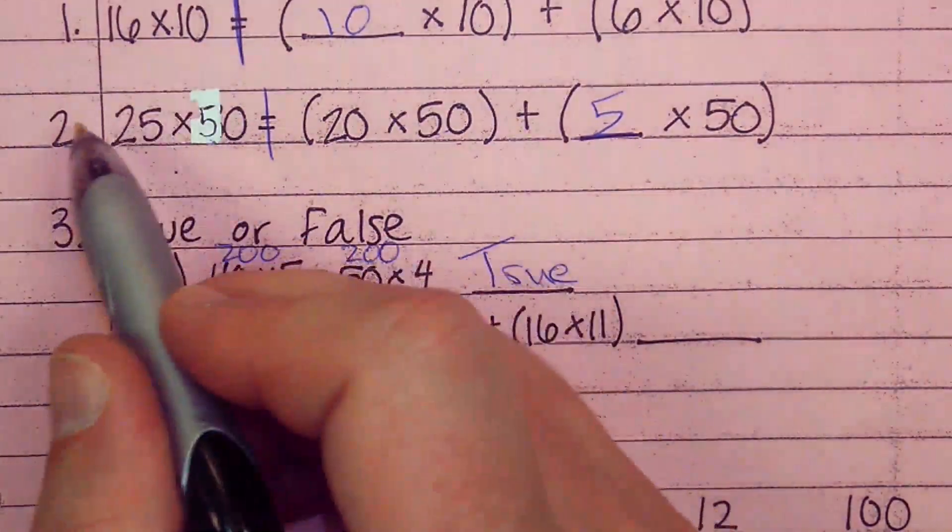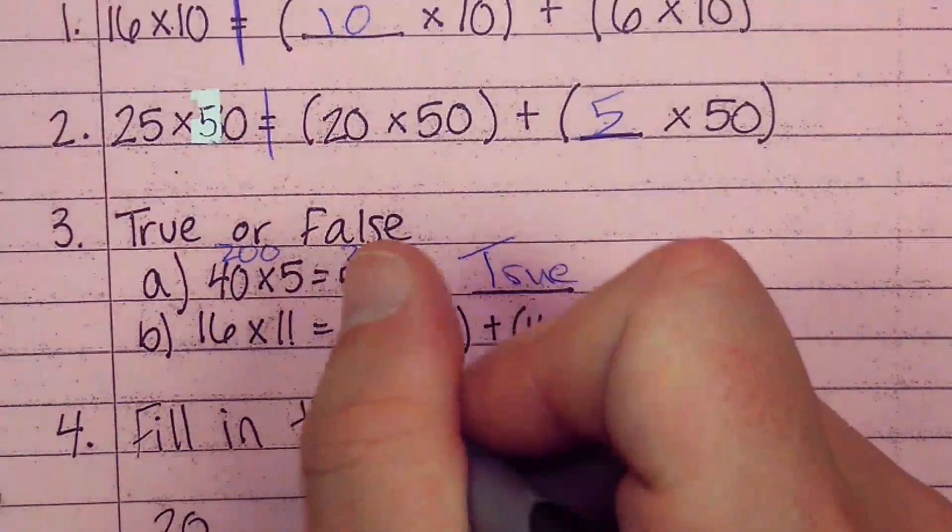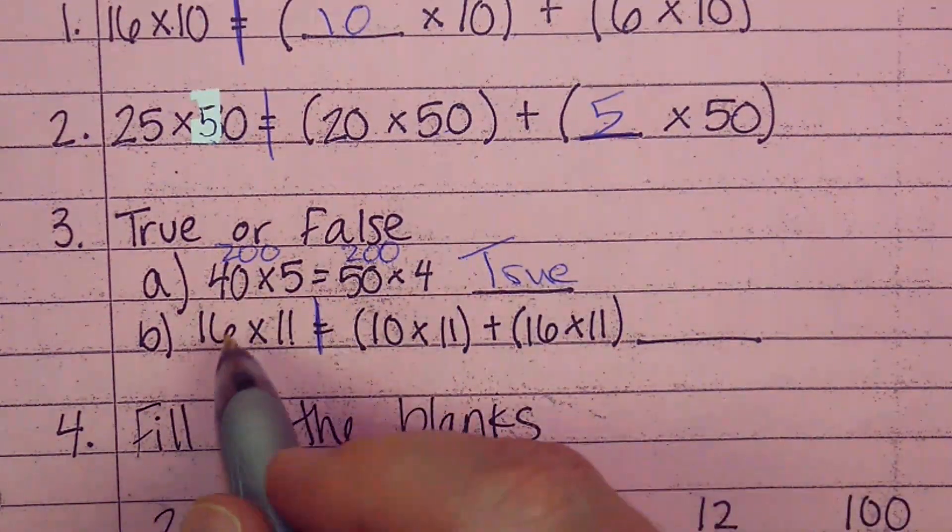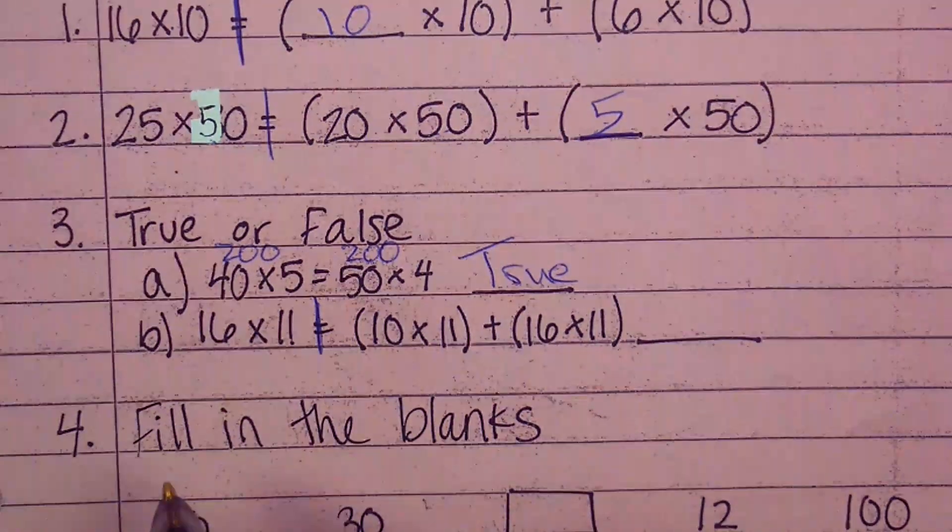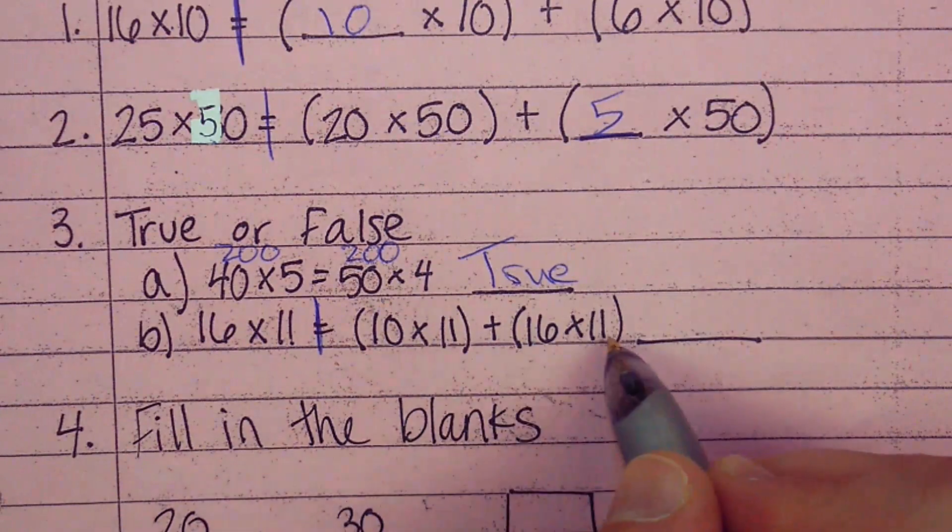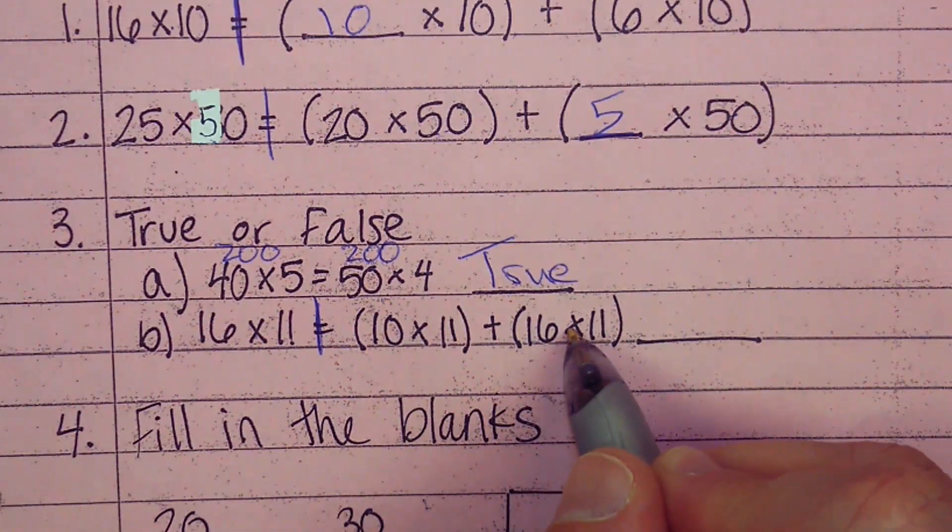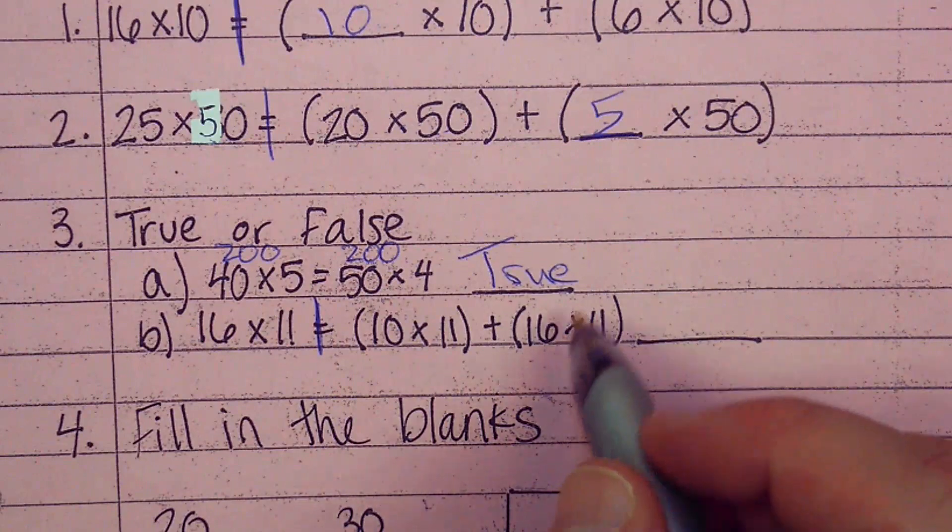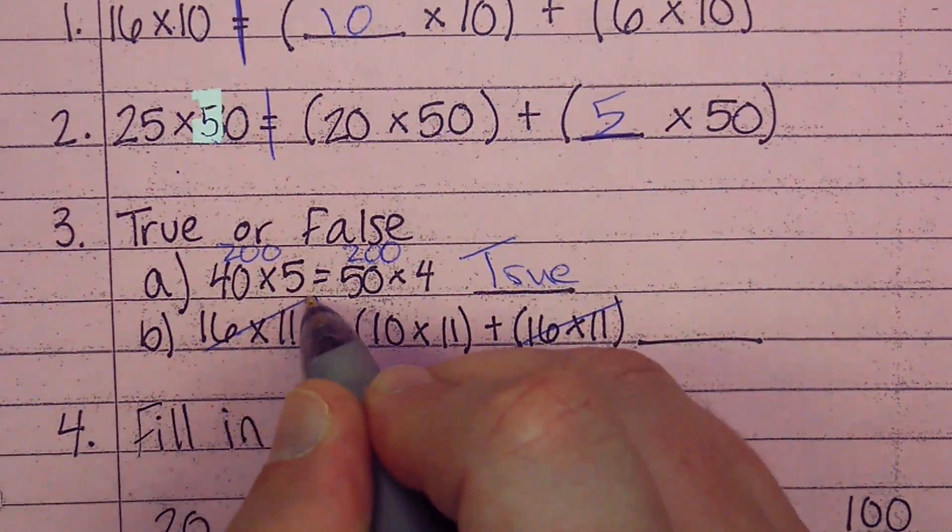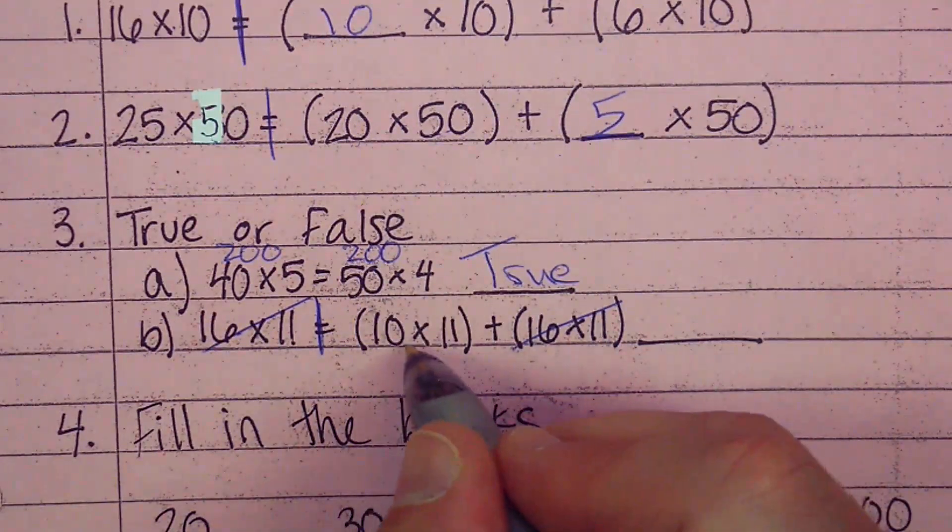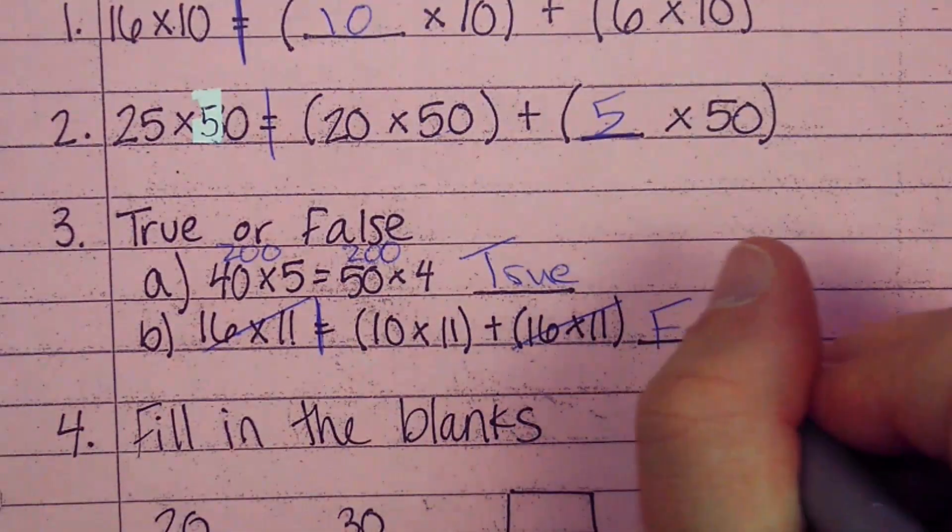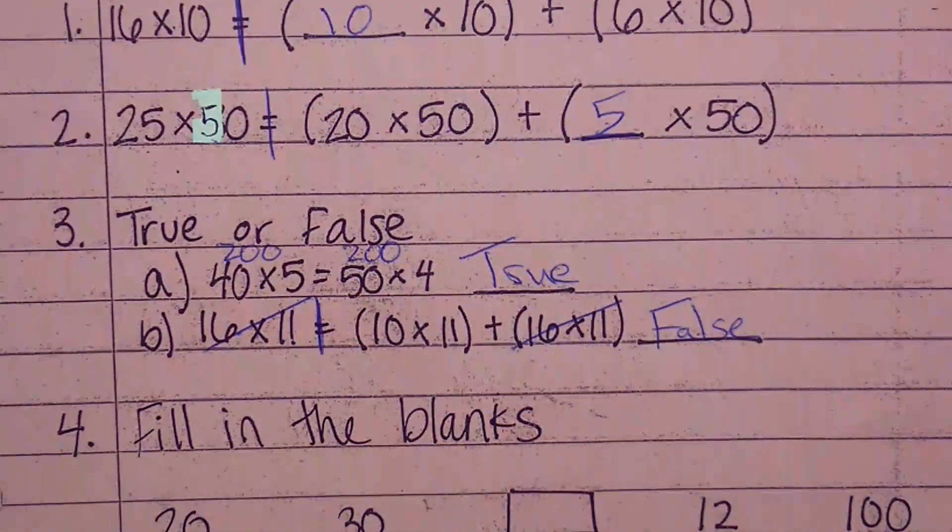Now for part B, I want you to think about how we did this up here. Think about where we're dividing. This side needs to match this side. I'm going to count 11 sixteen times. I'm going to count 11 ten times. I'm going to count 11 sixteen times. No, because I already have 16 times 11 and a 16 times 11, which means this side of the equation is 110 more than it should be. That is false.